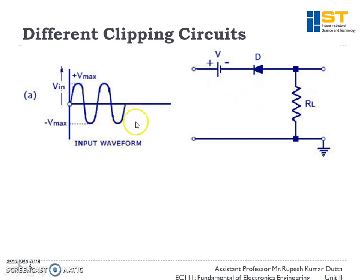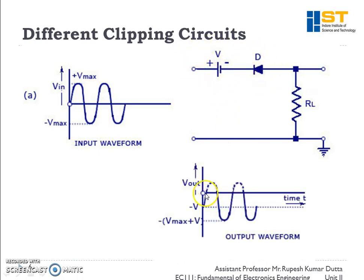Assume V (biasing voltage) = 2 V and Vmax = ±5 V. When the input voltage is less than 2 V, the resultant supply voltage is negative, so the diode is forward biased and the output follows the input. As soon as the input exceeds 2 V, the resultant voltage becomes positive, the diode becomes reverse biased, and we get no output.